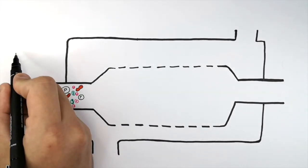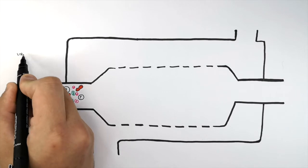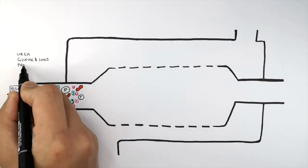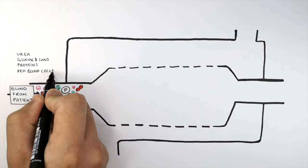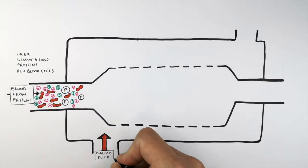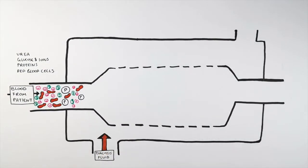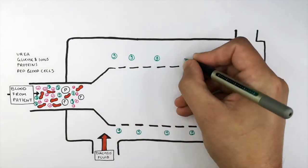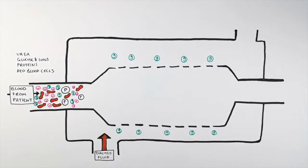The blood from the patient contains urea, glucose and ions, proteins, and red blood cells. The dialysis fluid entering the machine contains glucose, and this glucose will be at the same concentration as the glucose in the patient's blood, which will be explained shortly.